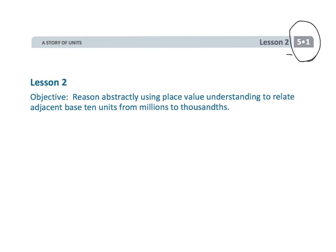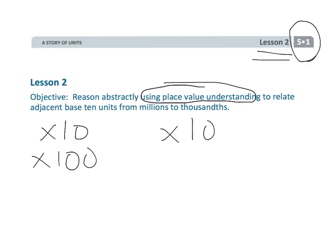Alright, this is fifth grade module one, lesson two. In this lesson we are going to continue talking about place value, and we're going to continue multiplying and dividing by powers of ten. Only this time we're going to start to reason a little bit and come up with that traditional shortcut of moving decimals to the left or to the right rather than the digits to the left or the right.